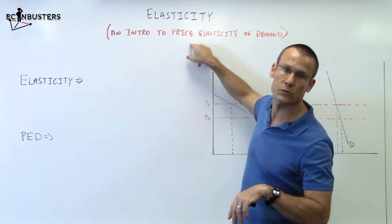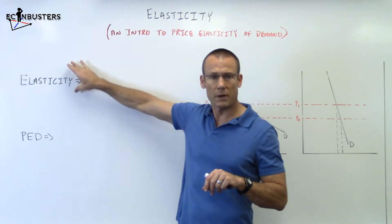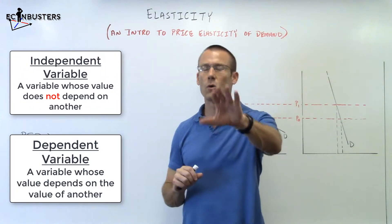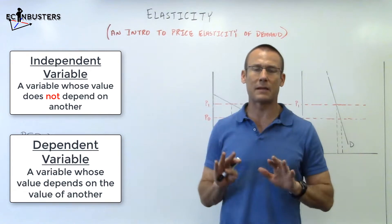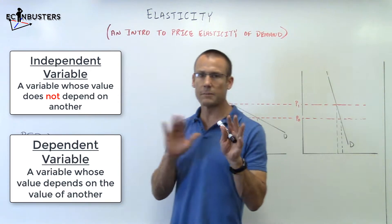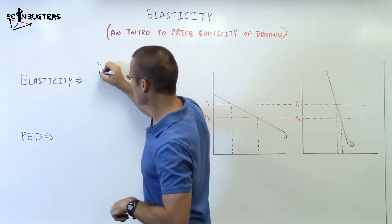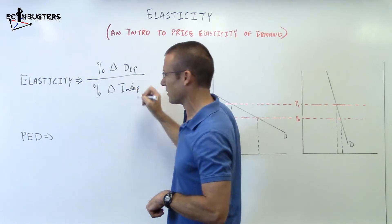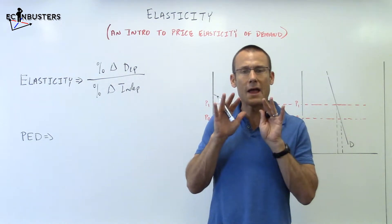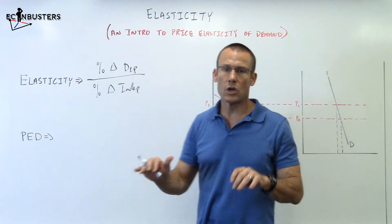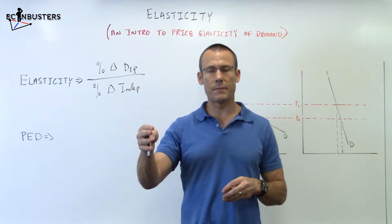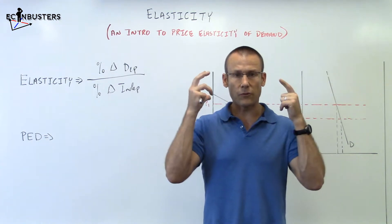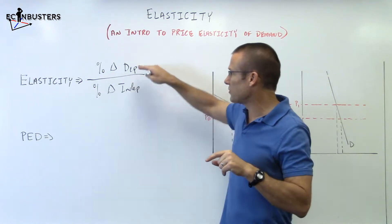Elasticity is a measurement of responsiveness — responsiveness of a dependent variable to an independent variable. The general formula for every single elasticity measurement is: percent change in some dependent variable divided by percent change in an independent variable. If you embrace this, you can handle any elasticity measurement — price elasticity of demand, cross price elasticity of demand, income elasticity of demand, price elasticity of supply, and many others — without having to memorize separate formulas.